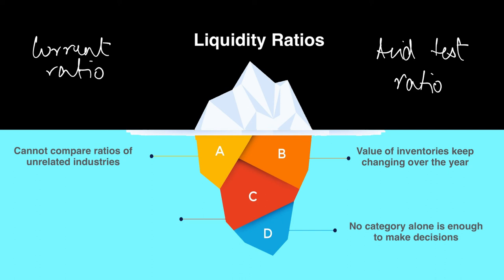Secondly, different businesses use different methods to value inventory — some use cost, some use net realisable value, and there are other methods too. When you look at two different statements of financial position, the inventory value may be calculated differently on the back end. There are limitations, of course, but the benefits of using liquidity and profitability ratios greatly outweigh the limitations — you can just never completely forget about them.